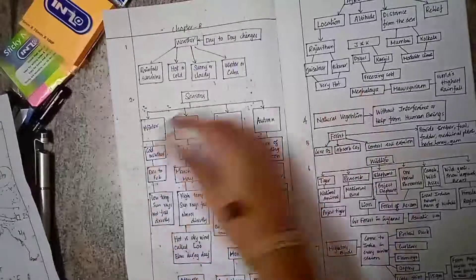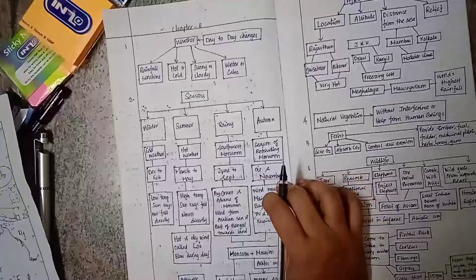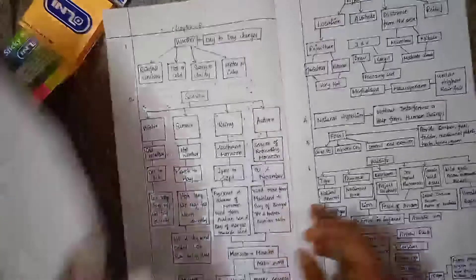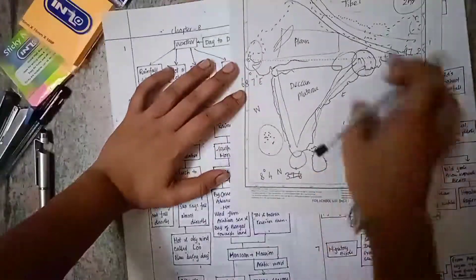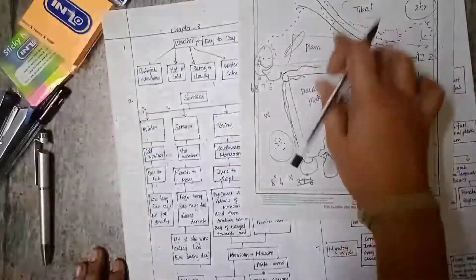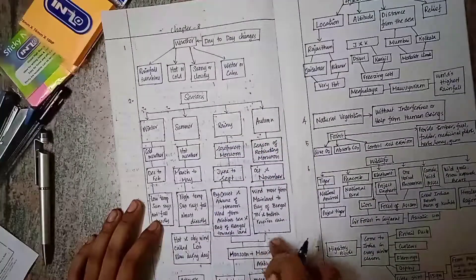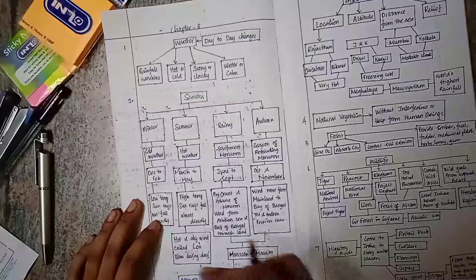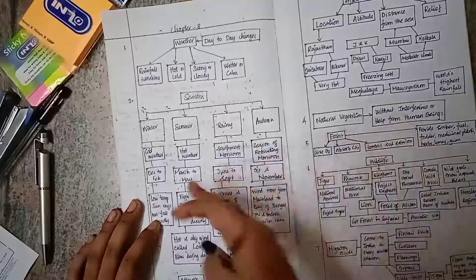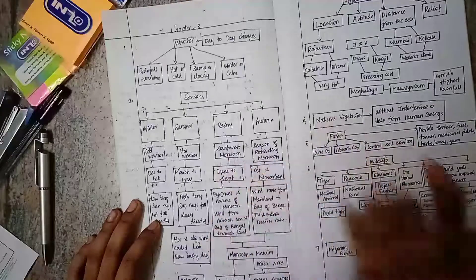Autumn is the season of retreating monsoon when the monsoon goes back. It is from October to November. Wind moves from mainland to Bay of Bengal. Monsoon is derived from the word meaning season. Good monsoon gives adequate rain and bountiful crops. During summer, a wind called loo, which is a hot and dry wind, blows during the day.